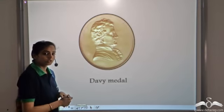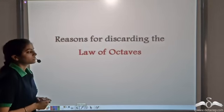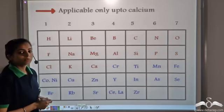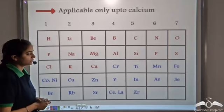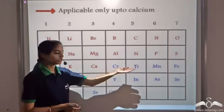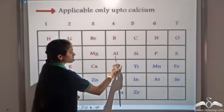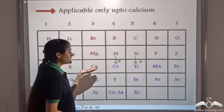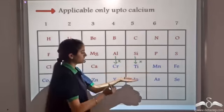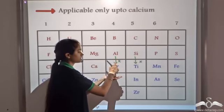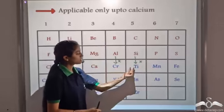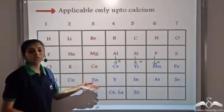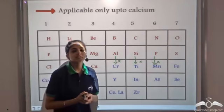There was some problem in the law of octaves due to which it is not accepted today. By the time Newlands gave his law, 56 elements had been discovered. When he placed the elements after calcium in increasing order of atomic mass, he observed that the properties of chromium were not similar to those of aluminium, and the properties of titanium were not similar to silicon, and so on. So after calcium, the law of octaves failed. All the remaining elements after calcium could not be accommodated in Newlands' law of octaves, and hence the law of octaves is discarded.